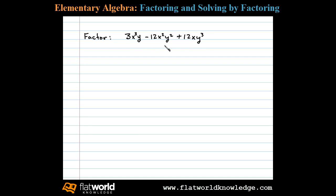Here we're asked to factor this trinomial. The first thing I notice is that there is a GCF. The greatest common factor here is 3xy. If we factor that out we'll be left with x squared minus 4xy plus 4y squared.